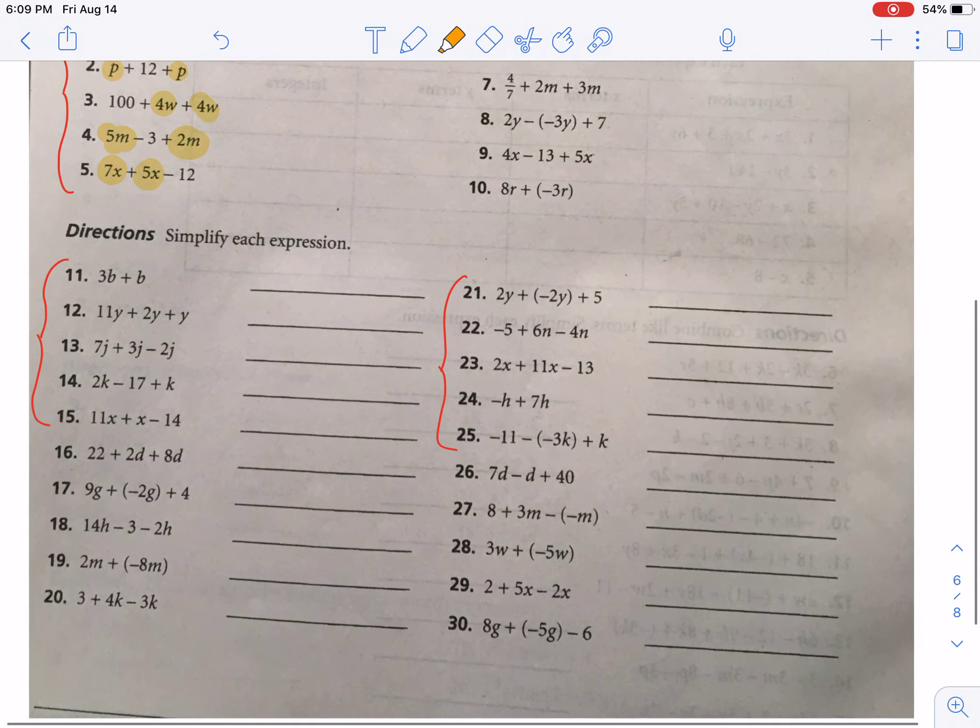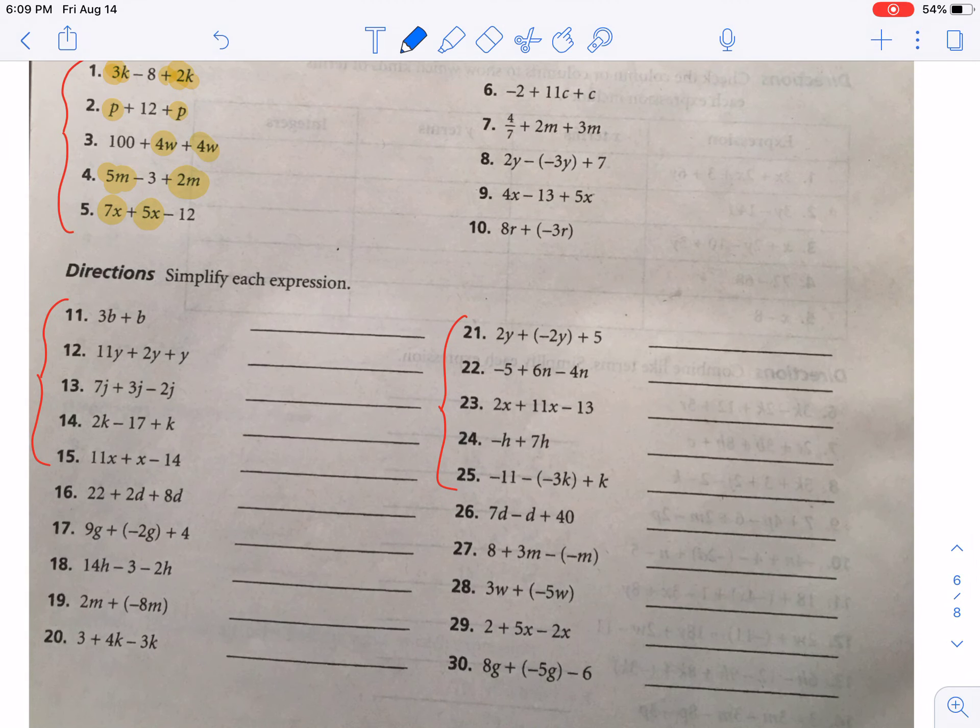And down here, we actually get to simplify them. So combining things in number 11, 3b plus invisible 1b, that would be 4b. Now, number 12, we have three terms. They all have a y. So they are all like terms. So that's 11y plus 2y plus invisible 1y. So that would be 14y. For 13, we also have three terms. And this time, we get a minus in there. So 7j plus 3j and then minus 2j. They're all like terms. So you can say 7 plus 3, that's 10, and then minus the 2, so that's 8. So 8j.